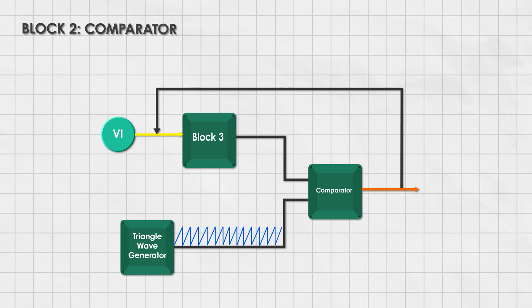Next is the comparator. It takes in the triangular wave from the first block and the modulating input signal from the third block. If the input signal is higher than the triangular wave, at any point, the output of the comparator goes high. If not, it goes low. And just like that, we have generated a PWM waveform.